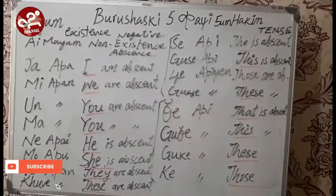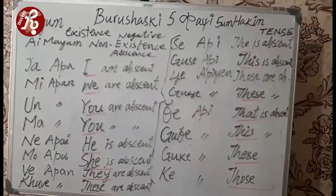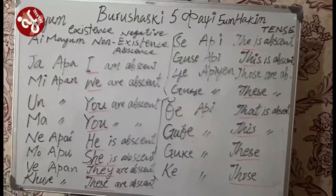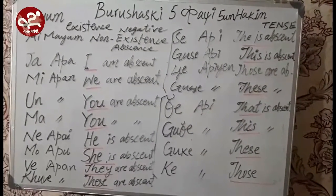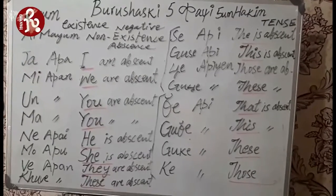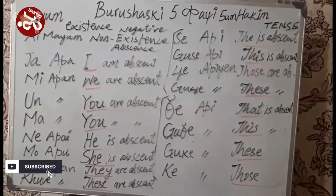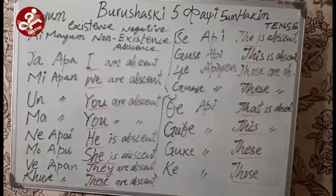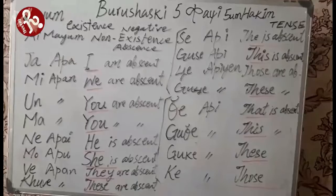We were discussing about Mayum, meaning the existence of gender, and Rotsi, the existence of Rotsi. In this we have studied four lessons covering past, present, future, and surprise tense — Akhesh, Baring. Now we are studying about the non-existence, Aymayum — non-existence.